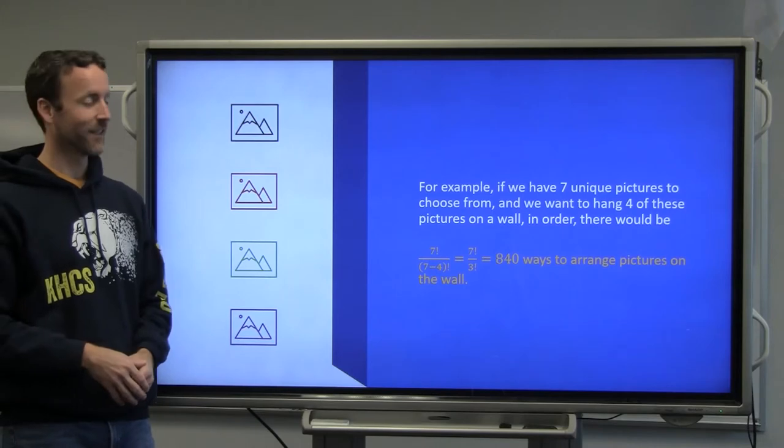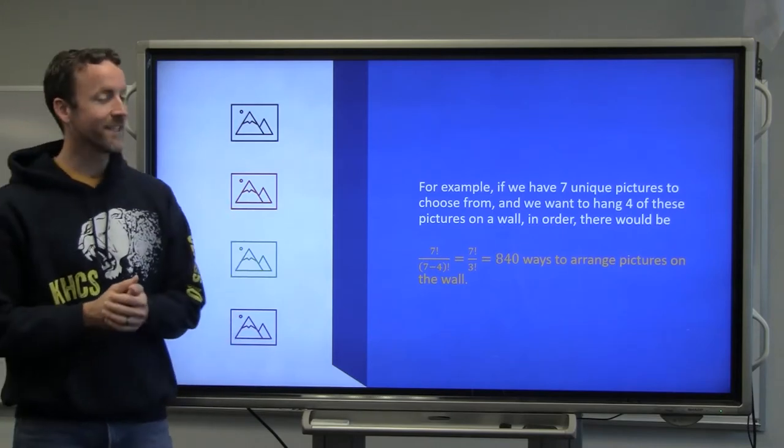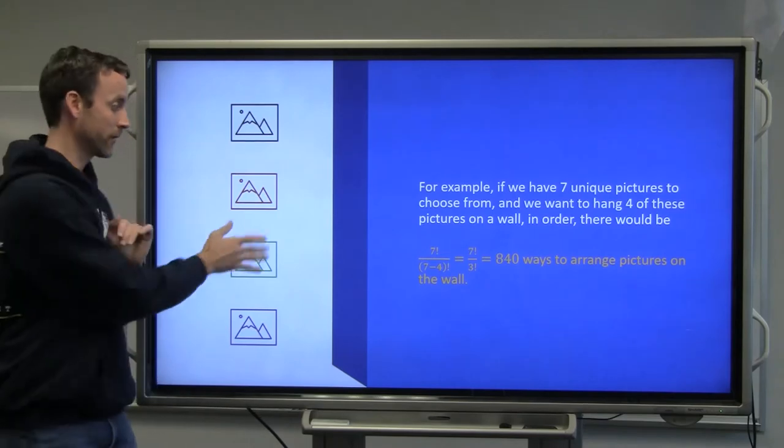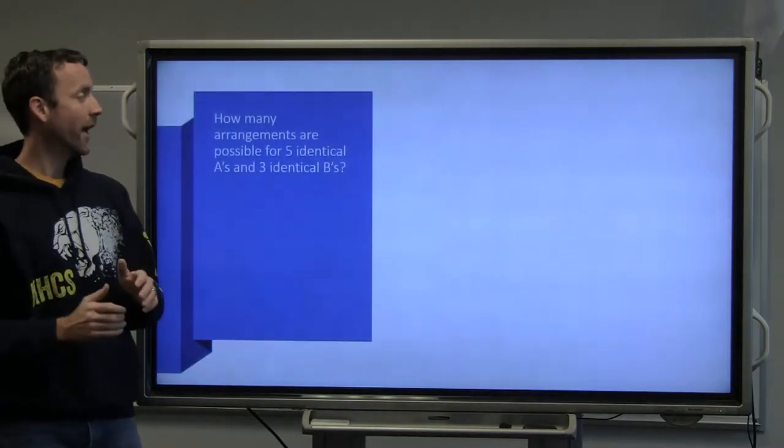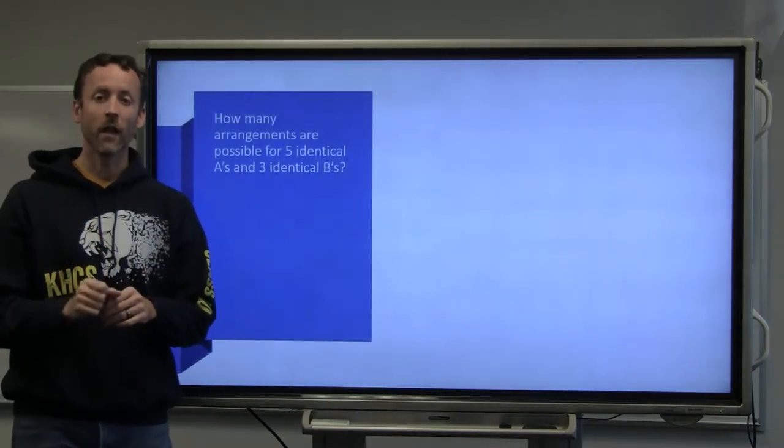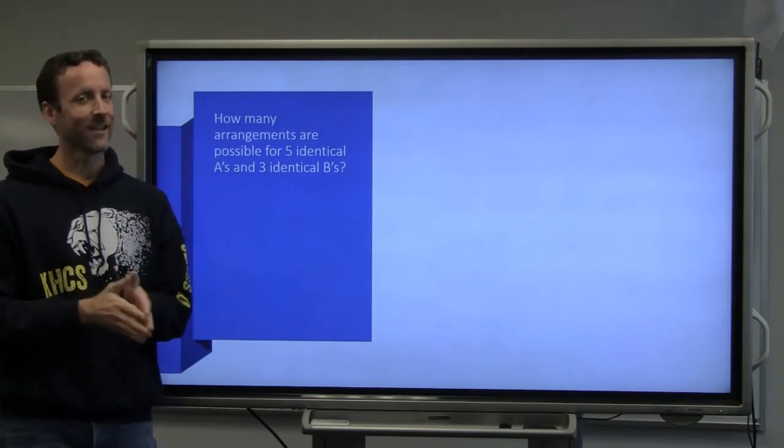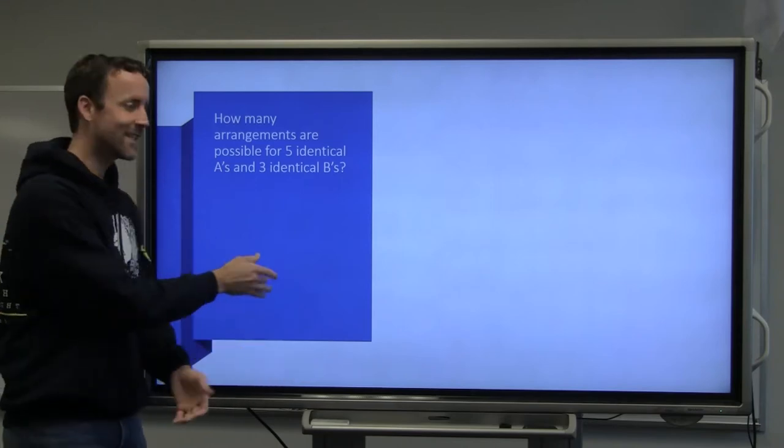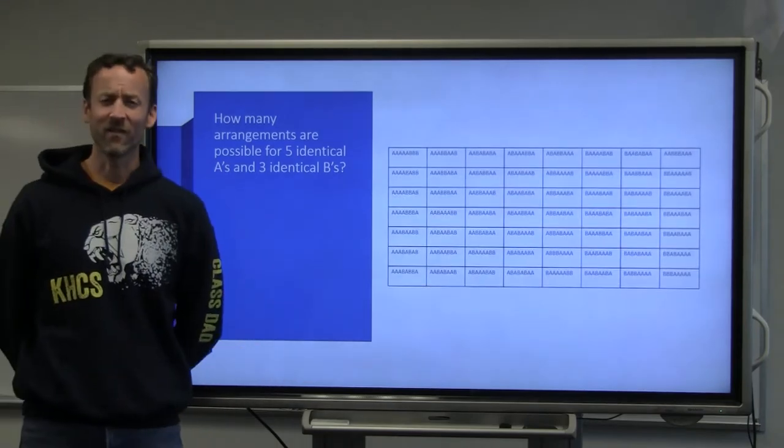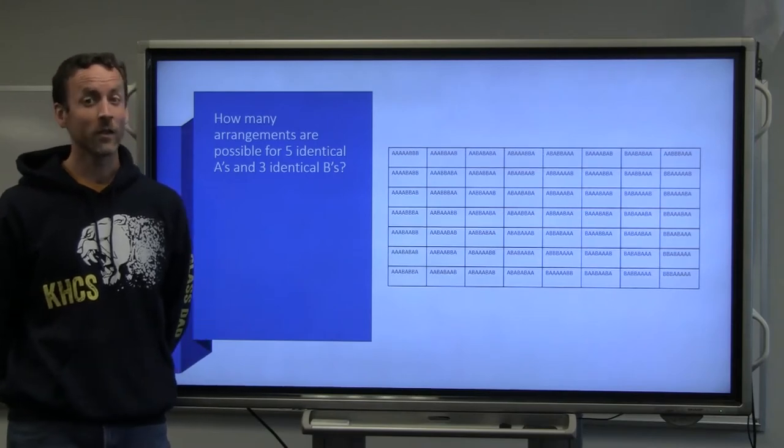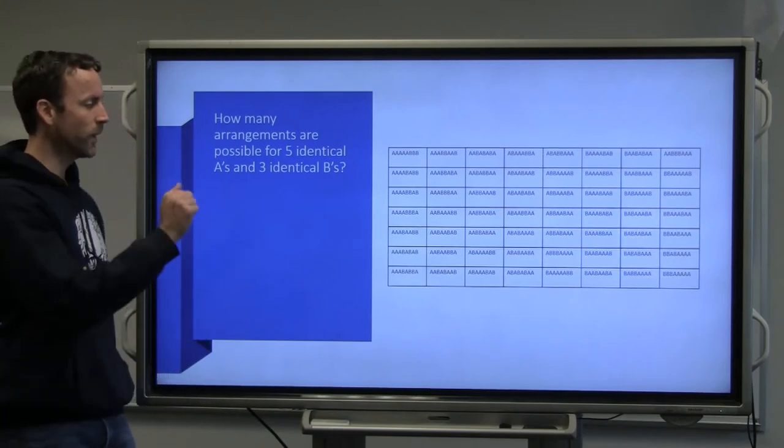That's a lot of ways. Now, this is for unique objects, but how would I solve for identical objects? For example, let's say I have five identical A's and three identical B's. How many ways would there be to arrange those? Well, one way would be to list them all. That's a very tedious way to solve. So instead, we could use a formula.